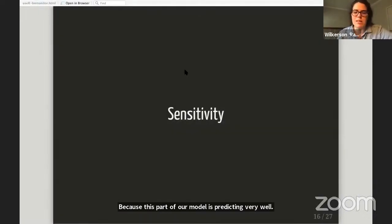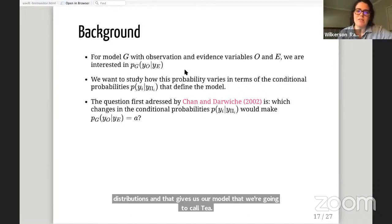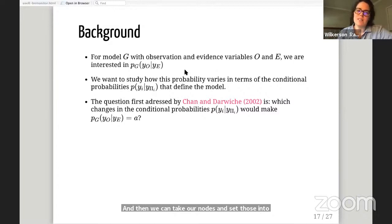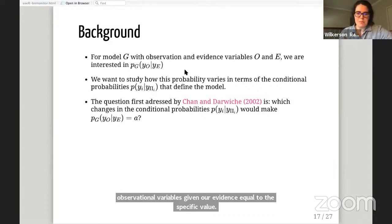That sums up our robustness monitors. Now we turn our attention to the sensitivity functions. For those, we take our DAG and our set of conditional probability distributions. That gives us our model G. We can set nodes into observation and evidence variables O and E. Our sensitivity functions tell us something about that probability distribution of our entire model for our observational variables given our evidence variables. We want to know how this overall probability varies once we start tinkering with the conditional probabilities that compose our model. This question was first posed by Chanoch Darwiche as what changes in the conditional probabilities would make the global probability equal to this specific value.